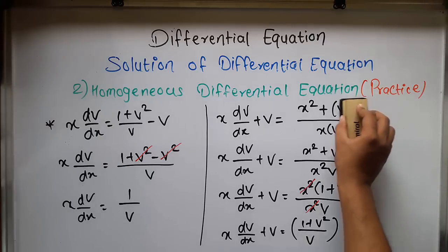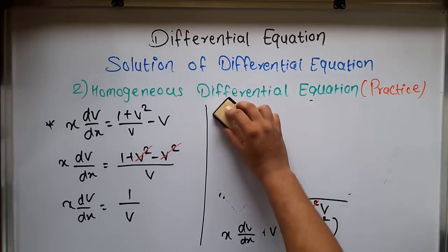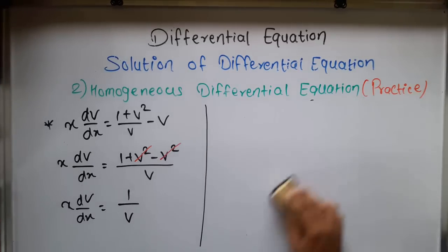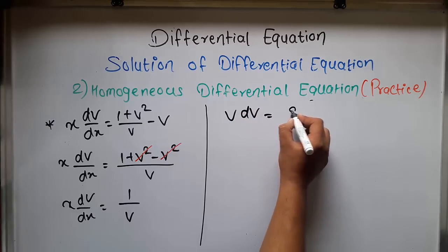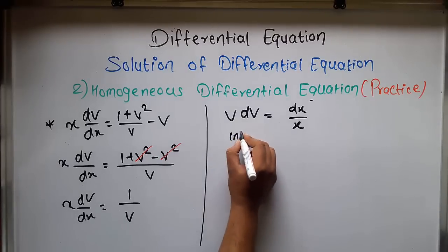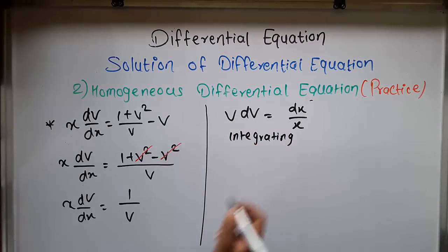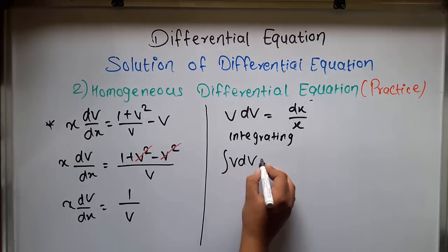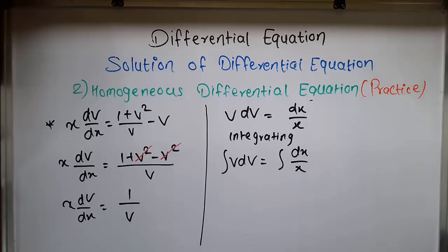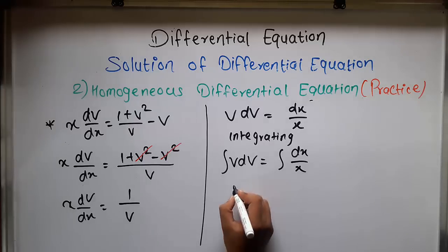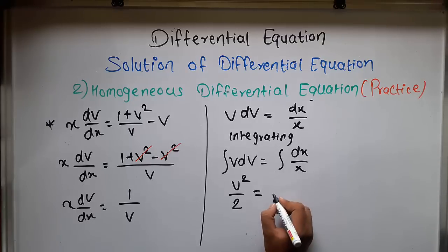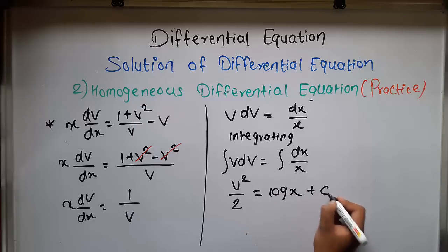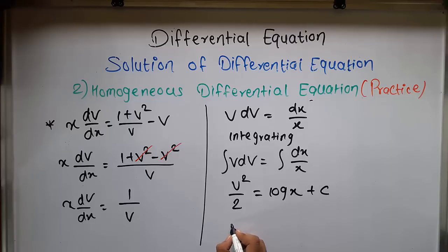Now, we use the variable separable form. We transfer v to the left-hand side and dx/x to the right-hand side, giving v dv equal to dx/x. Integrating both sides, the integral of v dv equals the integral of dx/x. Integrating v with respect to dv gives v²/2, and integrating 1/x with respect to dx gives log x plus c. Moving the 2 across, the equation becomes v² equal to 2 log x plus c.